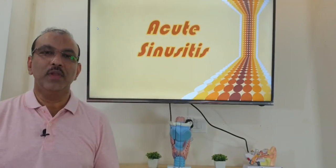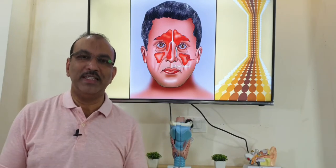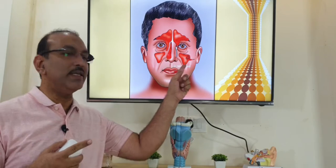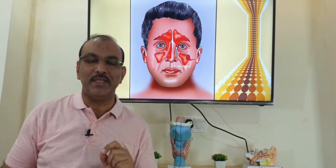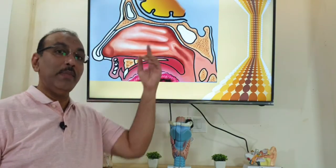Acute sinusitis. We all have 4 pairs of sinuses. We have one set here — that is the maxillary sinus — one pair here that is the frontal sinus, one pair on the medial side of the eye which are the ethmoid sinuses, and the last sinus that is way behind, almost near to the brain, that is the sphenoid sinus. So a total of 4 pairs of sinuses.